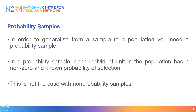We know that in order to generalise from a sample to a population, we need to use a probability sample. In a probability sample, each individual unit in the population has a non-zero and known probability of selection. This is not the case with non-probability samples. Probability samples come in many different forms.